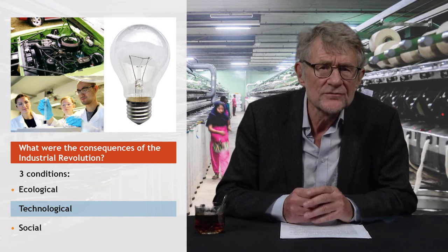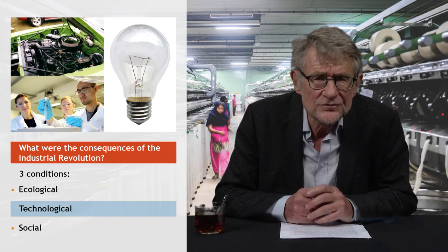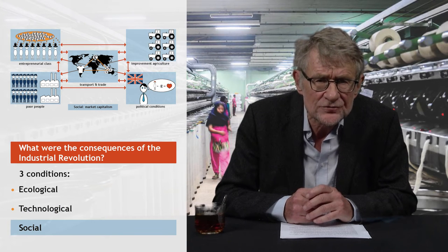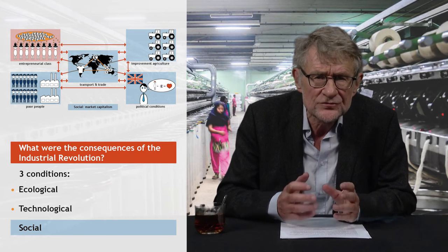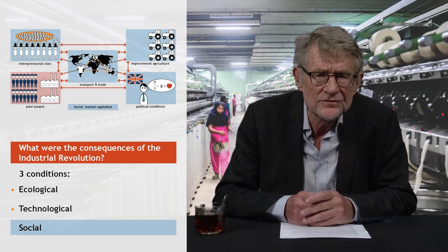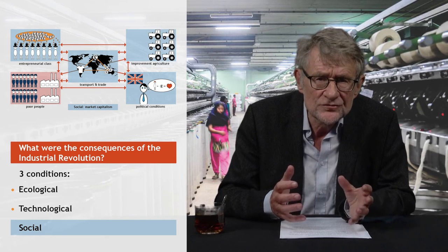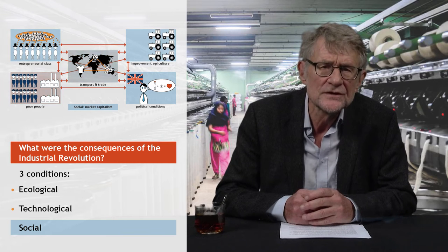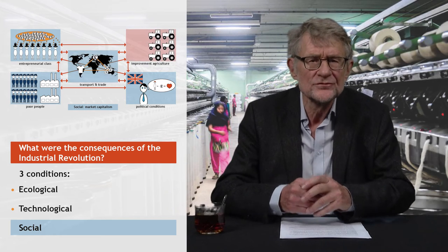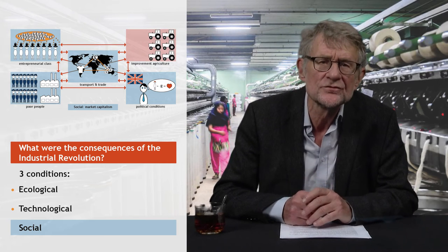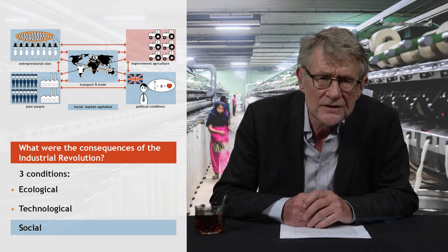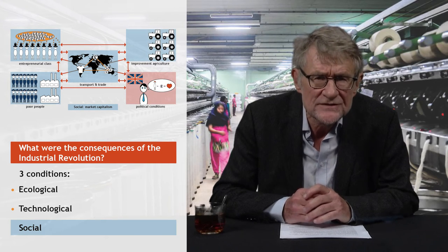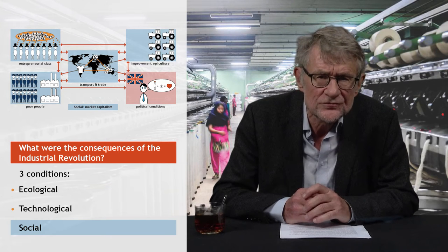Thirdly, while the Industrial Revolution was conditioned by market capitalism, it in turn strengthened this system of production. It enhanced the power and wealth of the class of the industrial bourgeoisie, increased the size of the industrial working class, and extended the organization of production in capitalist firms. It induced an almost continuous expansion of international traffic, trade, and capital movements. It brought the mechanization of agriculture, which reduced the number of farmers and agrarian workers and thereby induced massive urbanization.